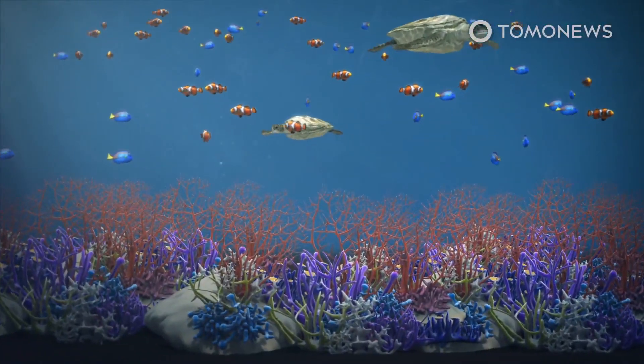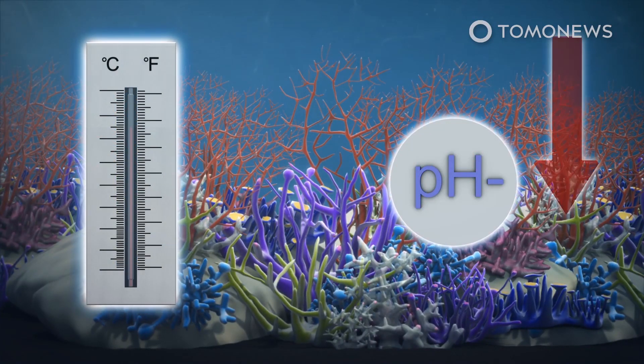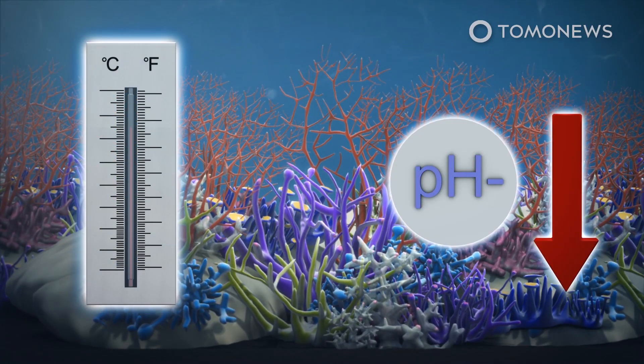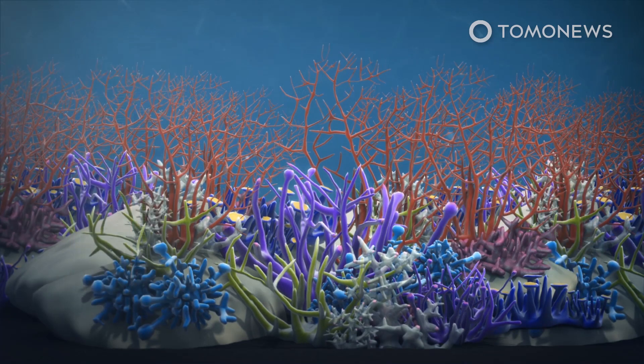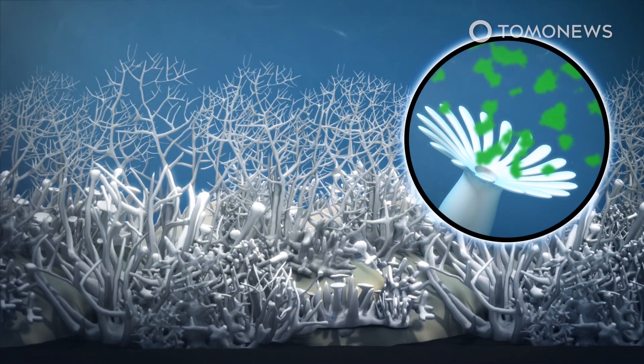Warming and rising acidity bleach coral reefs by making corals eject their symbiotic algae. A new study presented to the American Geophysicists Union says that these processes will kill off nearly all coral reef habitats by 2100.